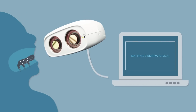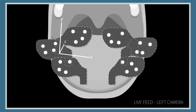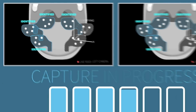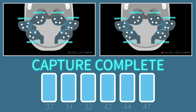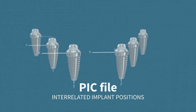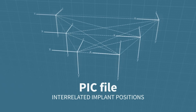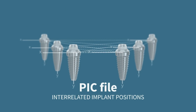The PIC Camera is approached to the oral cavity and the capture begins automatically. Instantly, the PIC abutment positions are identified, and their relative distances and angles are measured. A notification appears in real time when all the necessary data has been acquired. The results are immediately exported to a PIC file that contains the exact positions, angles, and interrelated distances between the implant platforms.